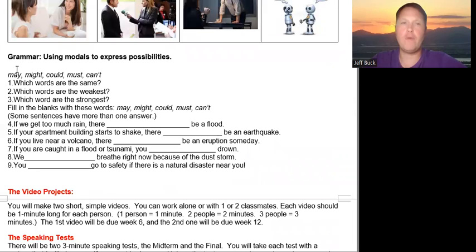All right? And now the grammar, modals to express possibilities. May, might, could, must, and can't. So which words are the same? May and might. Which words are the weakest? May, might, and could. You can do this with me or pause the video and do it yourself and then come back. Which words are the strongest? Must and can't. Fill in the blanks. Some sentences have more than one answer.